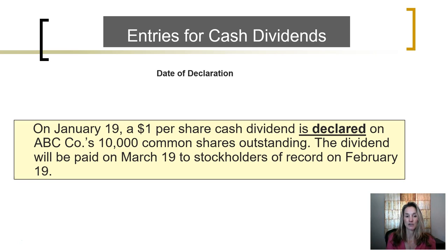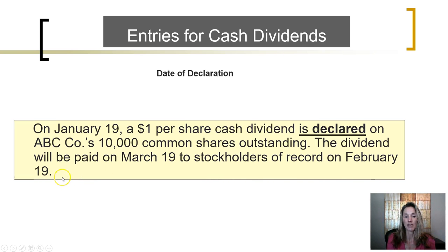Let's look at the date of declaration. On January 19th, a $1 per share cash dividend is declared on ABC Company's 10,000 common shares outstanding. Outstanding means the shares are held outside the corporation by owners. The dividend will be paid on March 19th to stockholders of record on February 19th.